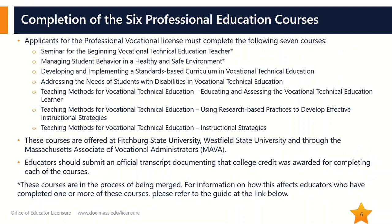In order to be awarded a professional vocational educator license, educators must also complete six three-credit professional education courses approved by the Department of Elementary and Secondary Education. These courses address various pedagogical techniques for working in vocational technical education. The courses are offered at Fitchburg State University, Westfield State University, and through the Massachusetts Association of Vocational Administrators, also known as MAVA. Educators should contact the university to see which courses are being offered in a given semester. The courses may be taken in any order.